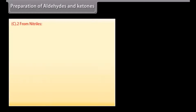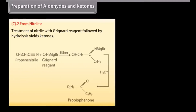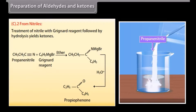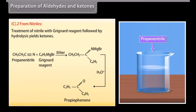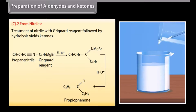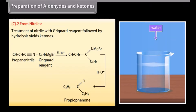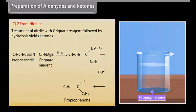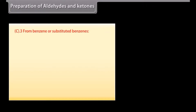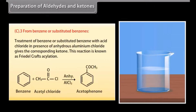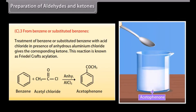Preparation of ketones from nitriles: treatment of a nitrile with a Grignard reagent followed by hydrolysis yields ketones. A Grignard reagent in ether reacts with propanenitrile to form an intermediate that upon hydrolysis gives propiophenone. From benzene or substituted benzenes: treatment of benzene or a substituted benzene with an acid chloride in the presence of anhydrous aluminium chloride gives the corresponding ketone. This reaction is known as Friedel-Crafts acylation.